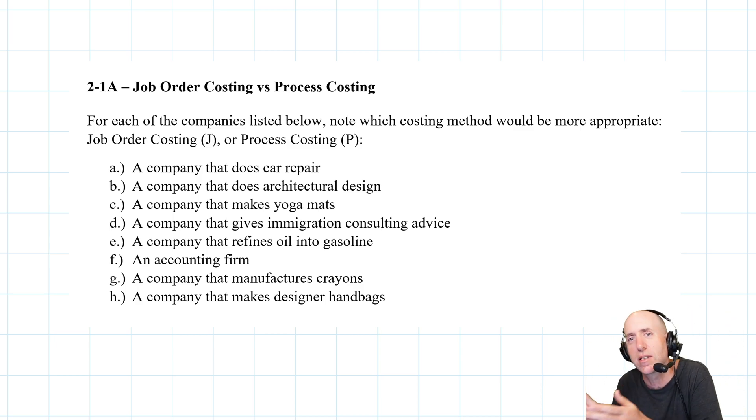Process costing is when you walk into the store and you buy something out of a package. They didn't make that just for you. They made those ramen noodles for everybody—just go grab whatever pack you want. They don't have to say, 'Package number one, this is our material, labor, and overhead. Package number two, this is our material, labor, and overhead.'